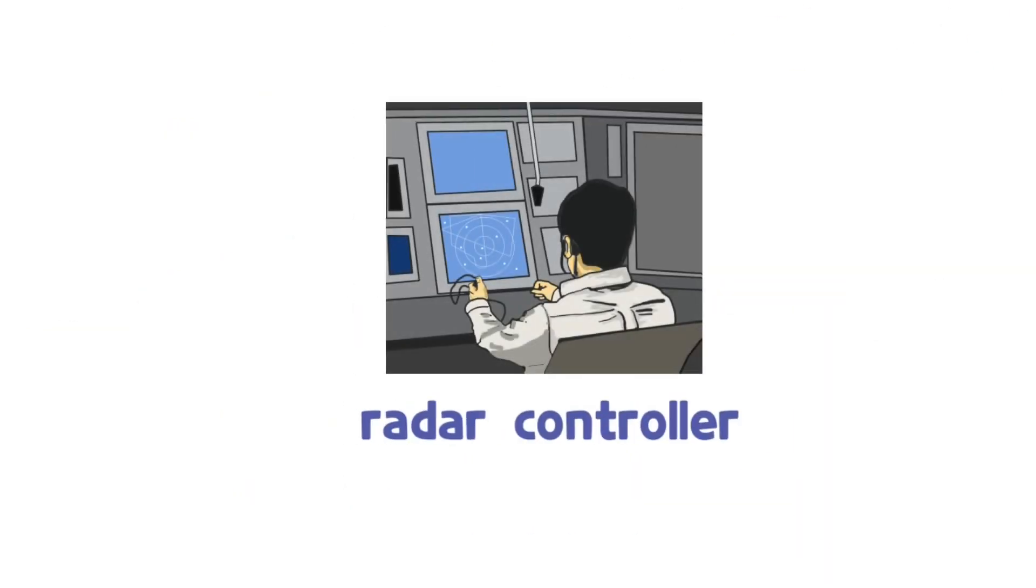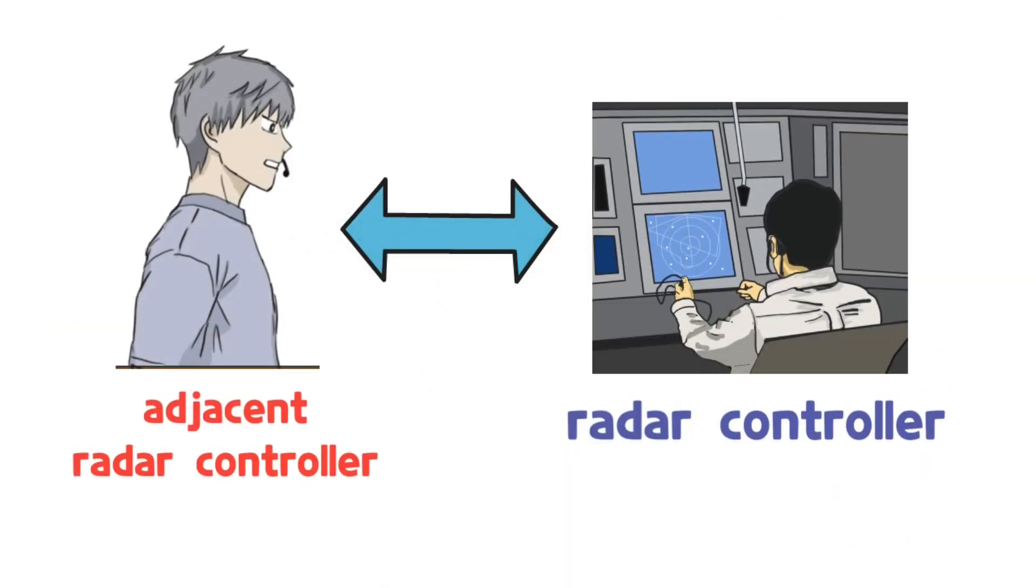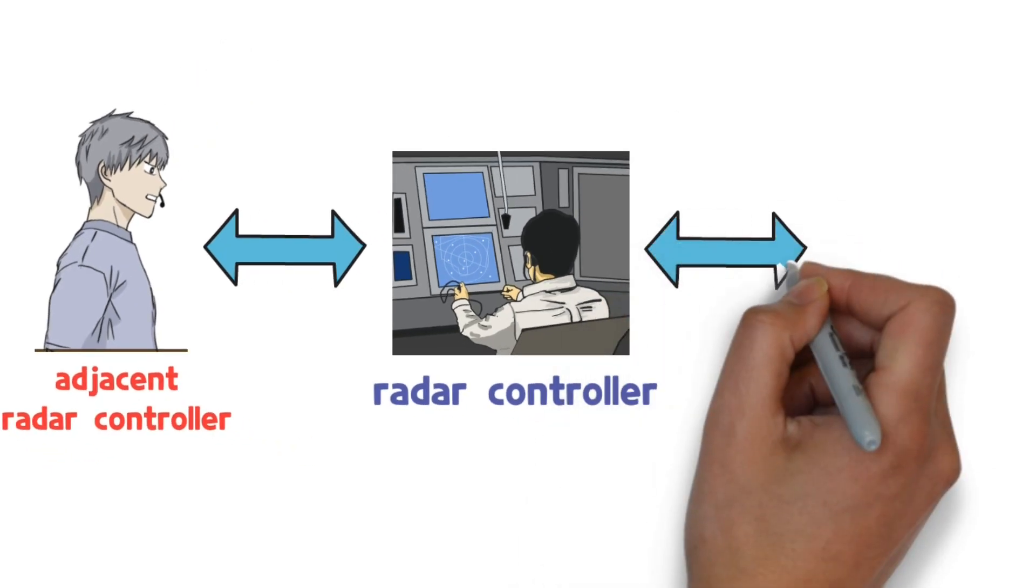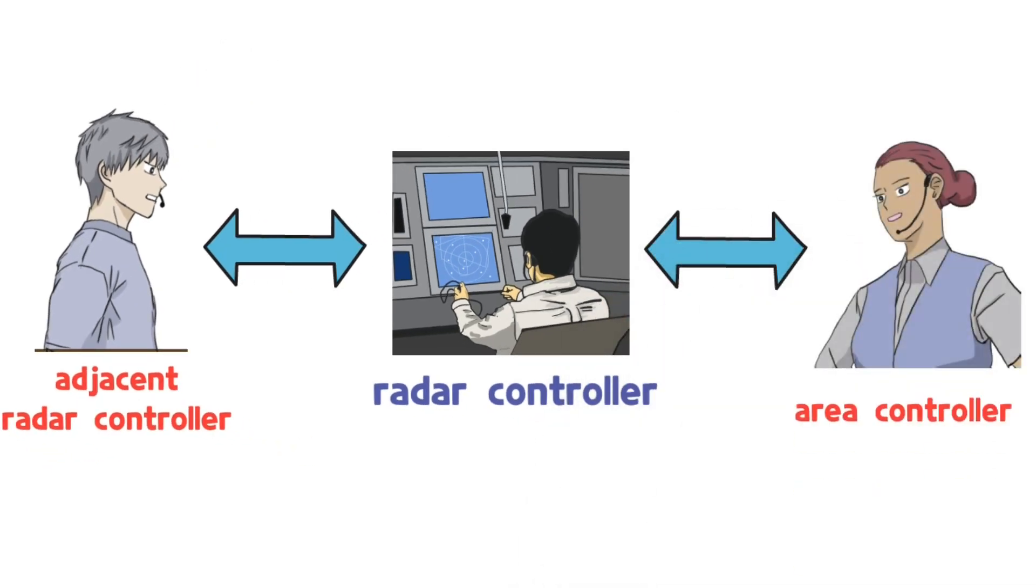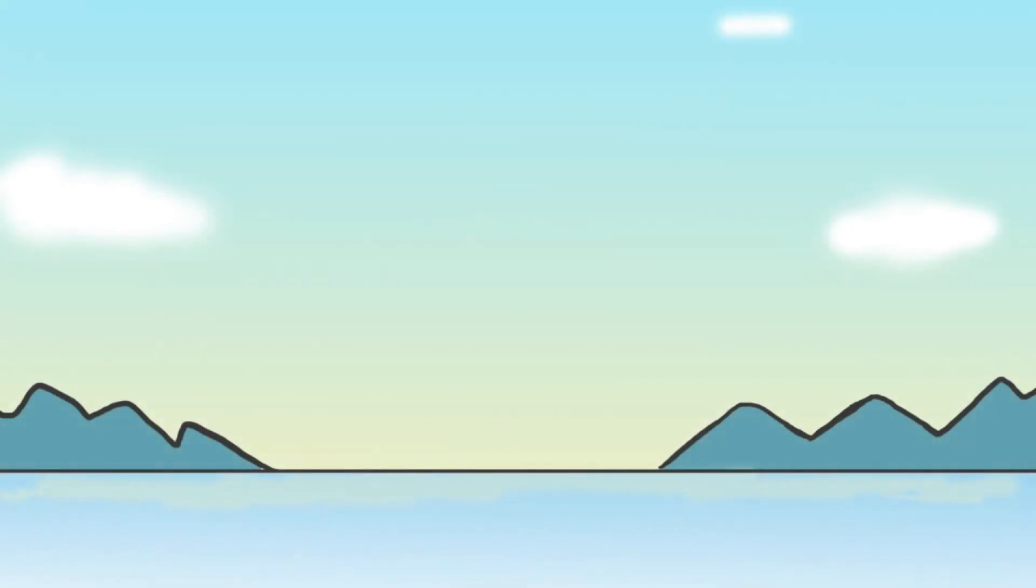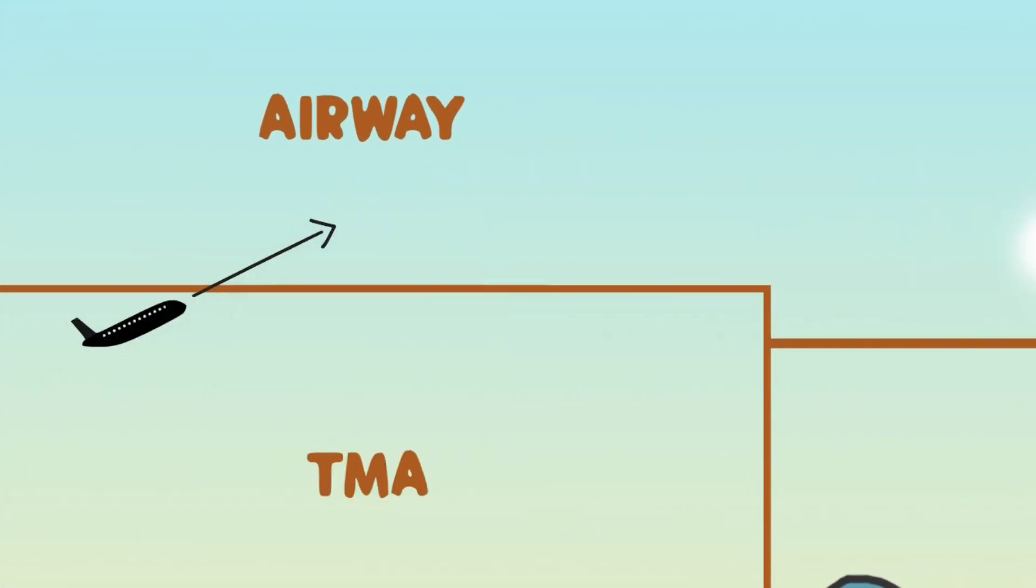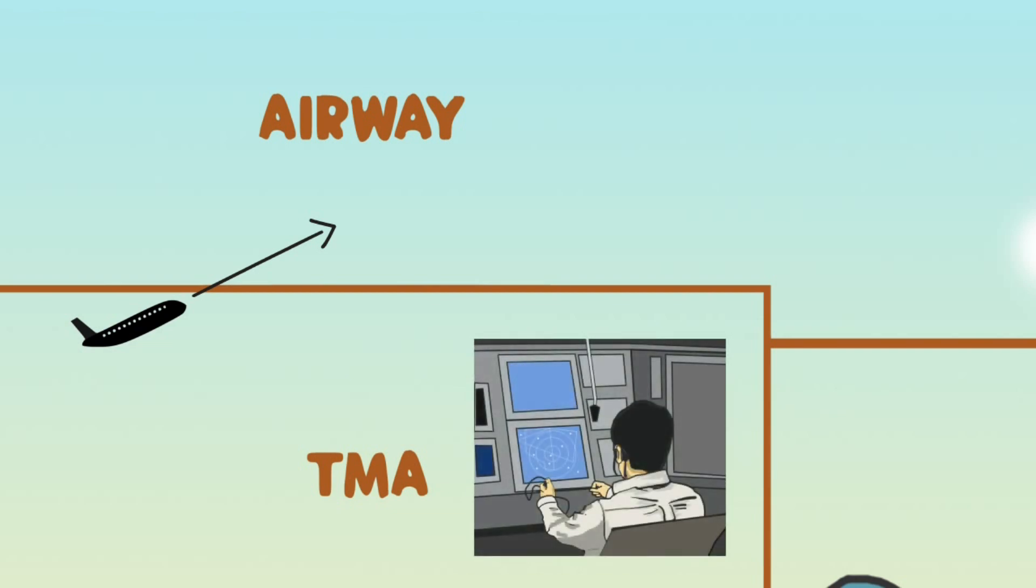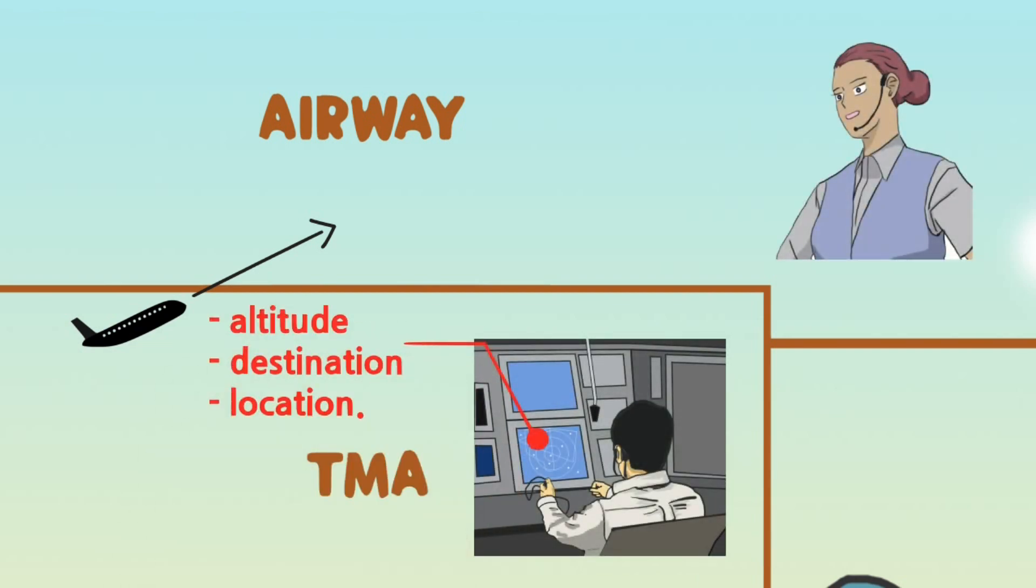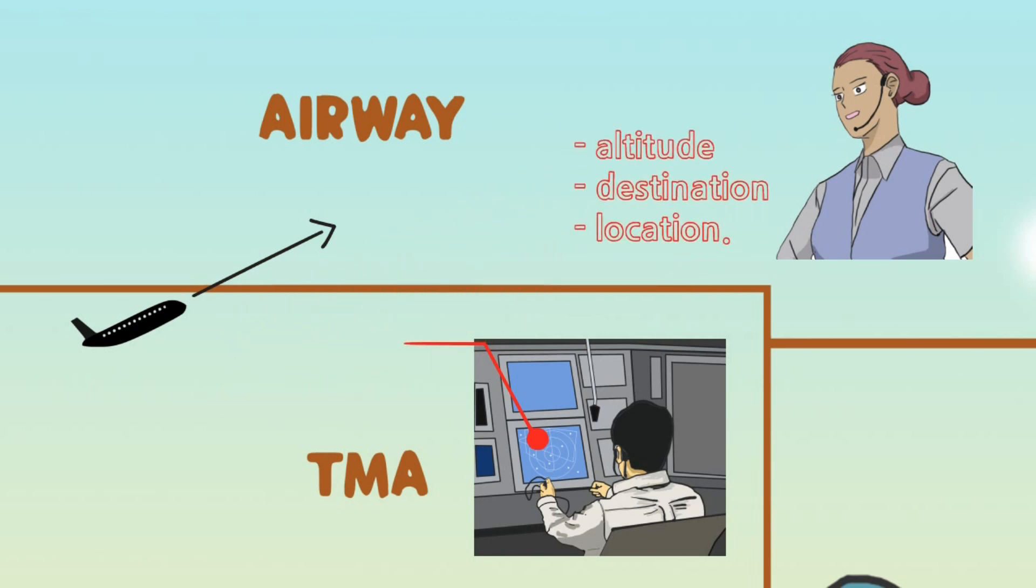On the other hand, radar controllers must communicate with radar approach facilities or area control center in adjacent areas frequently. When the aircrafts are transferred or handed off to each other's traffic control area, the controllers exchange and coordinate information, such as the aircraft's altitude, destination, and location.